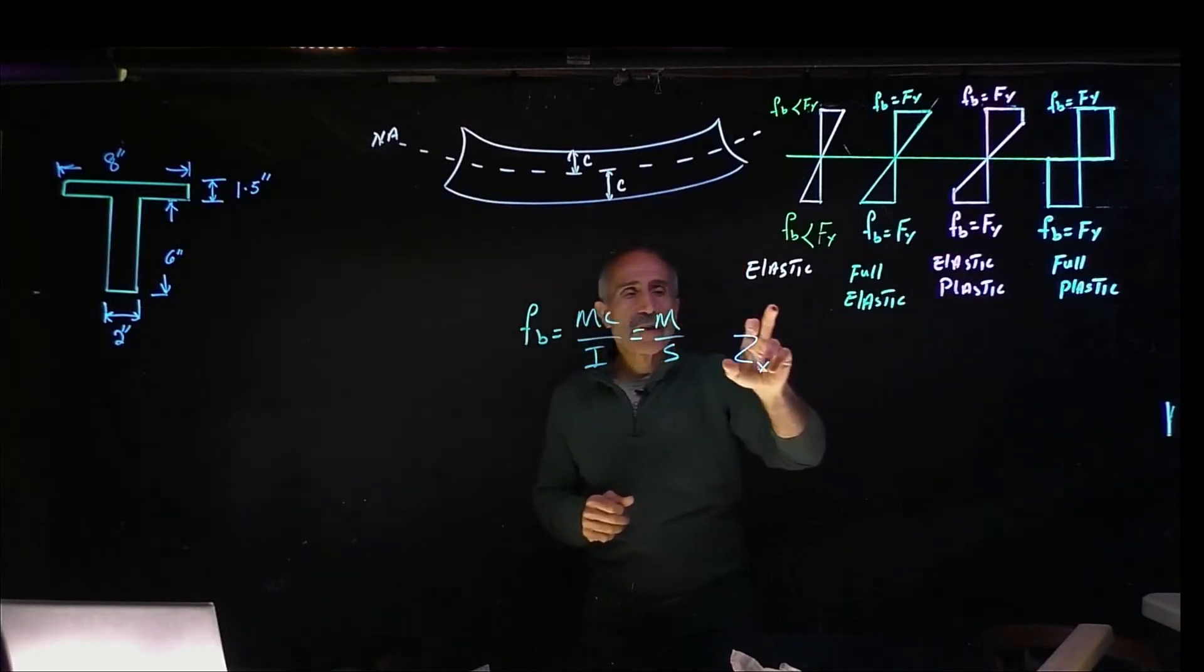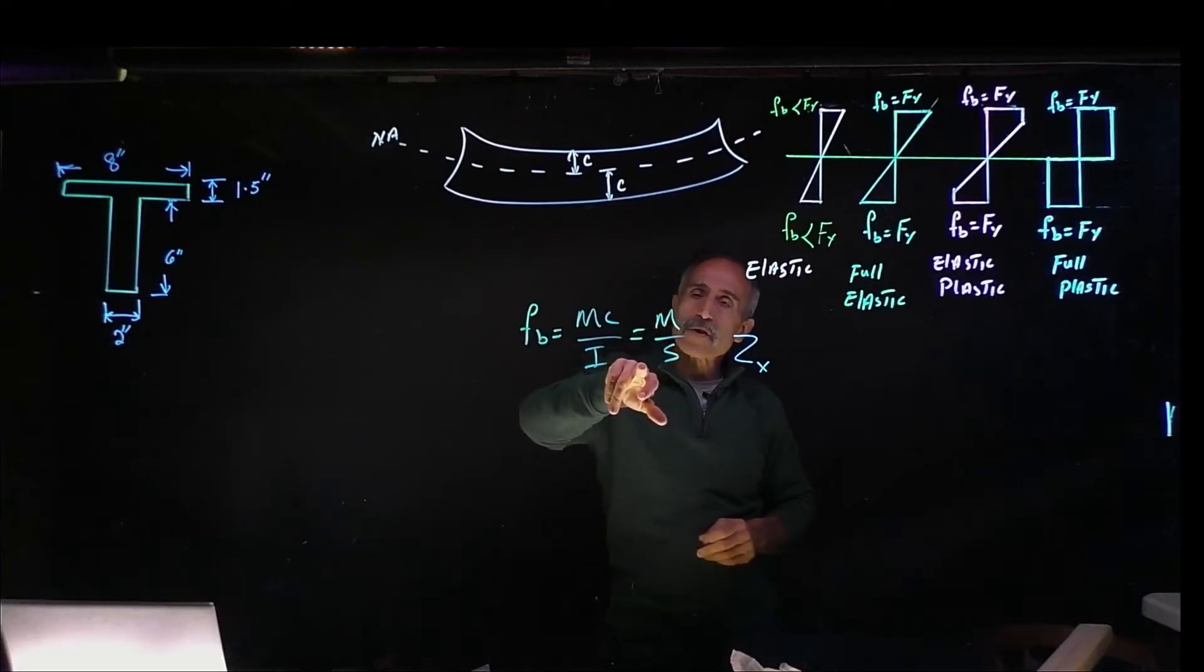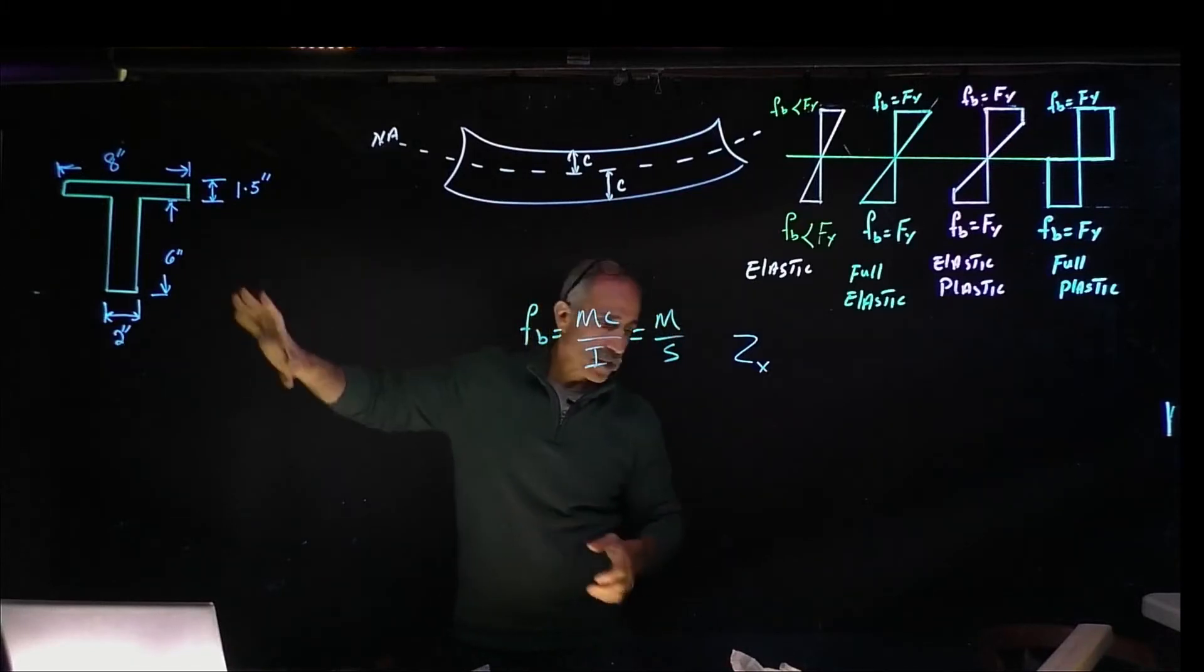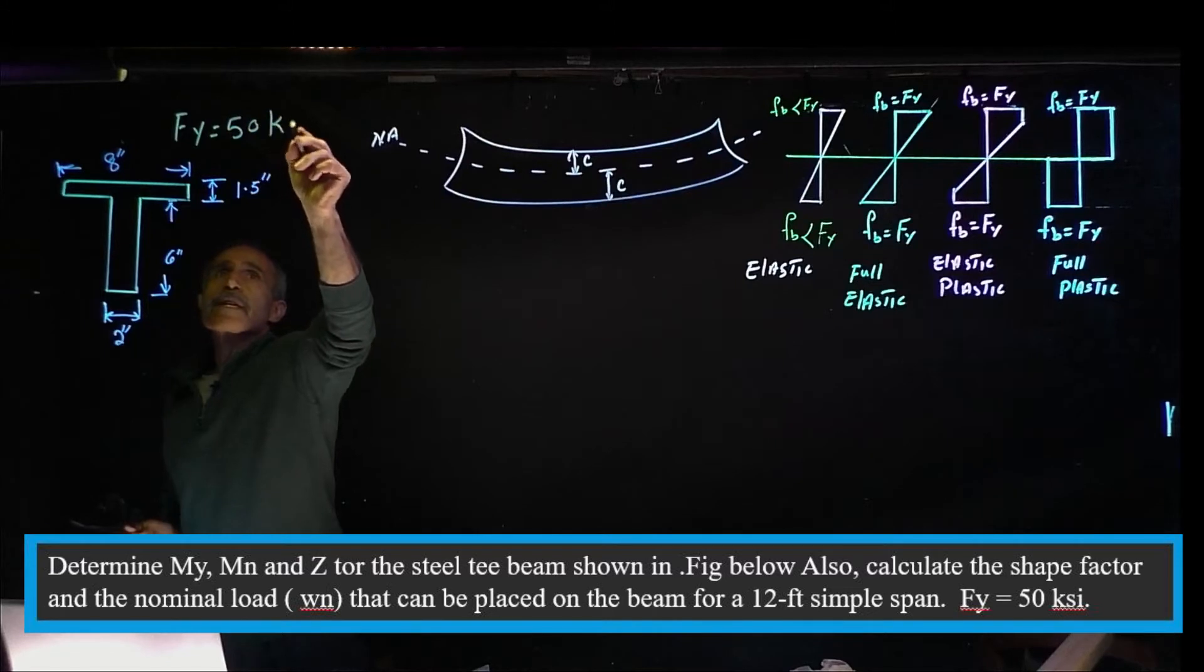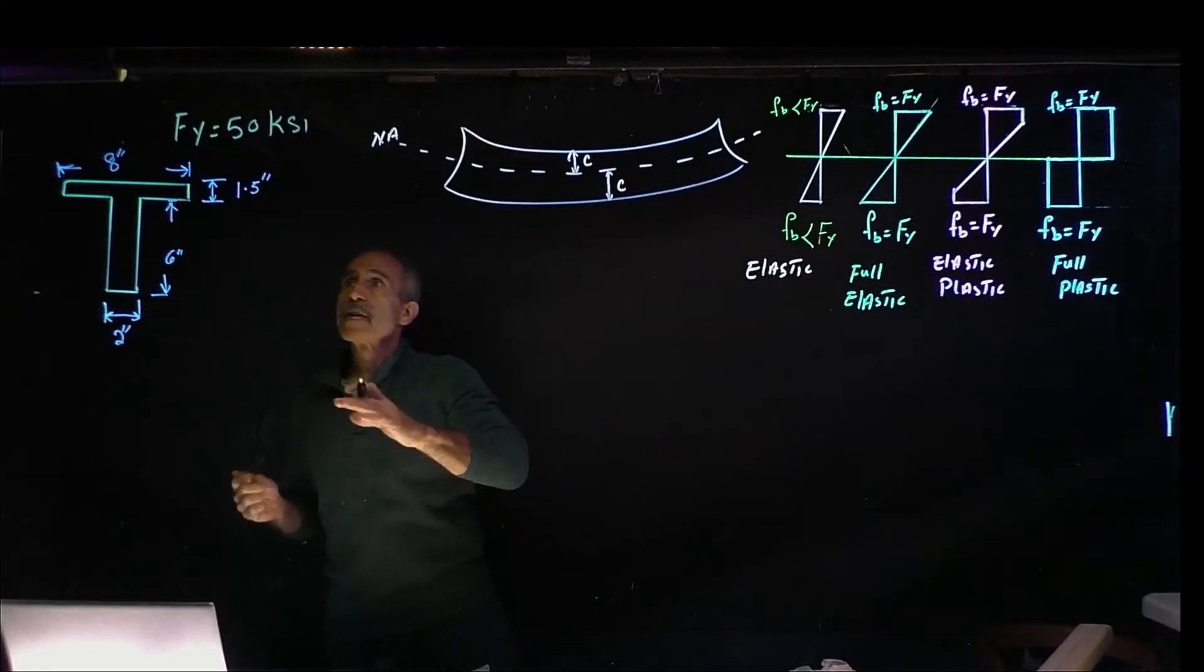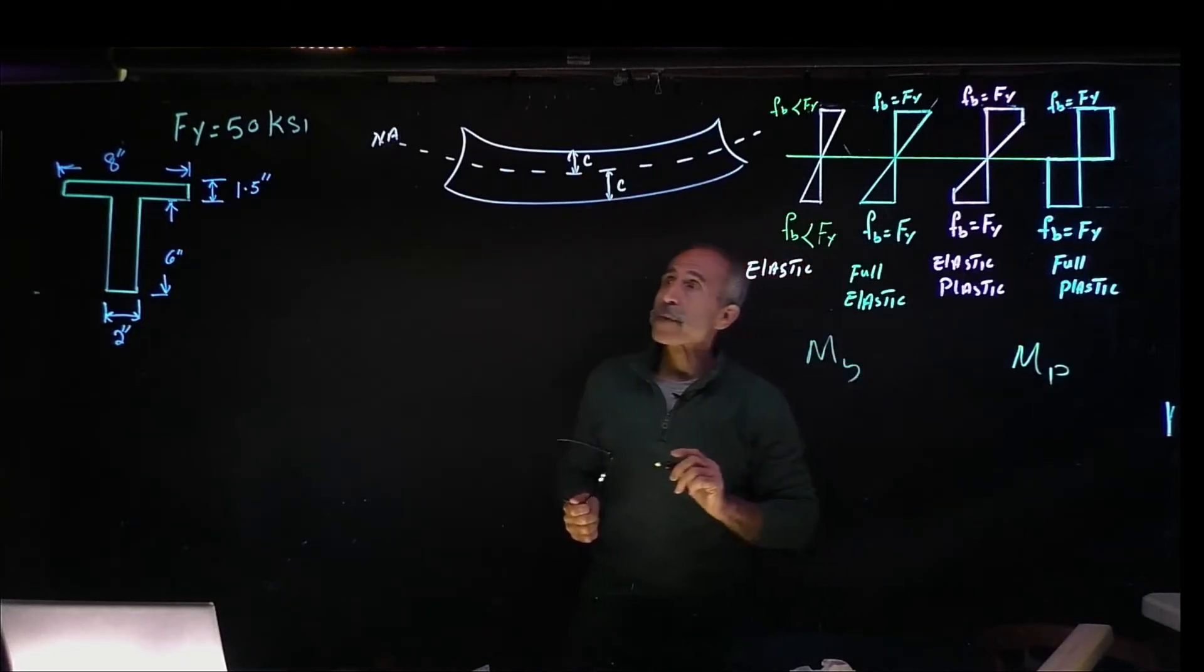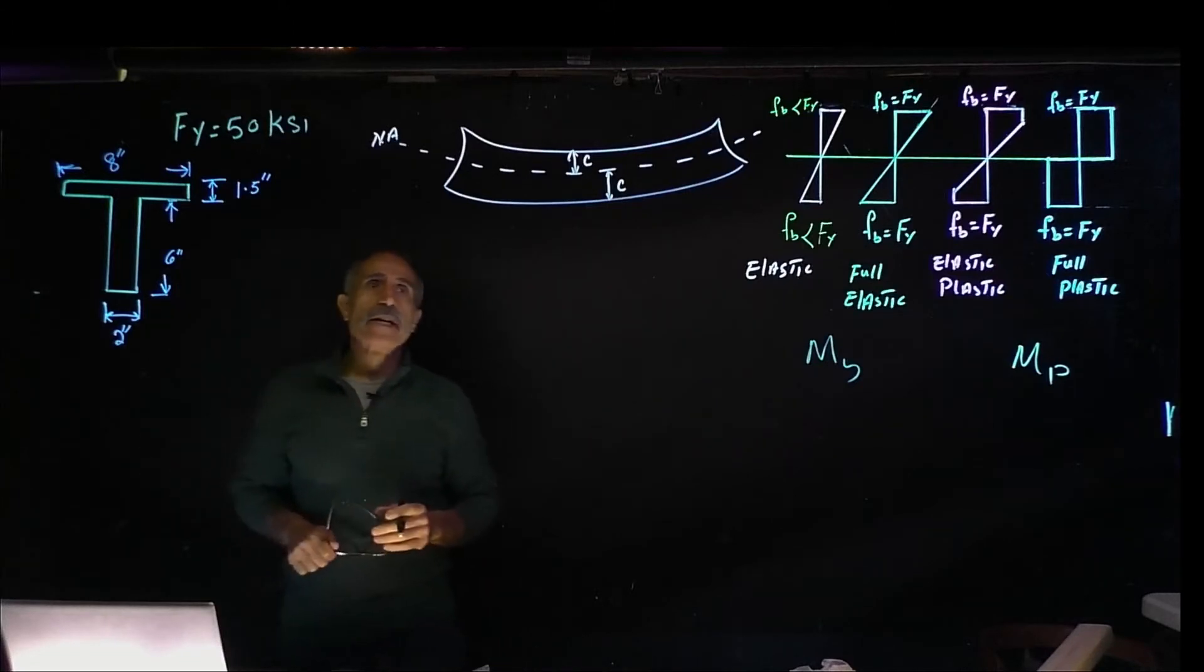In this area we calculate section plastic modulus, and here we take section elastic modulus S. The ratio of these two together, Z over S, is called the shape factor, which we will discuss in this problem. Let's work on this problem to explain this better. How about this steel cross-section, the FY for this is 50 KSI. We want to know what is MY, the bending moment for this section, and also the plastic moment MP. We want to find MP and MY, and then dividing them gives us the shape factor. In the process we have to calculate Z.